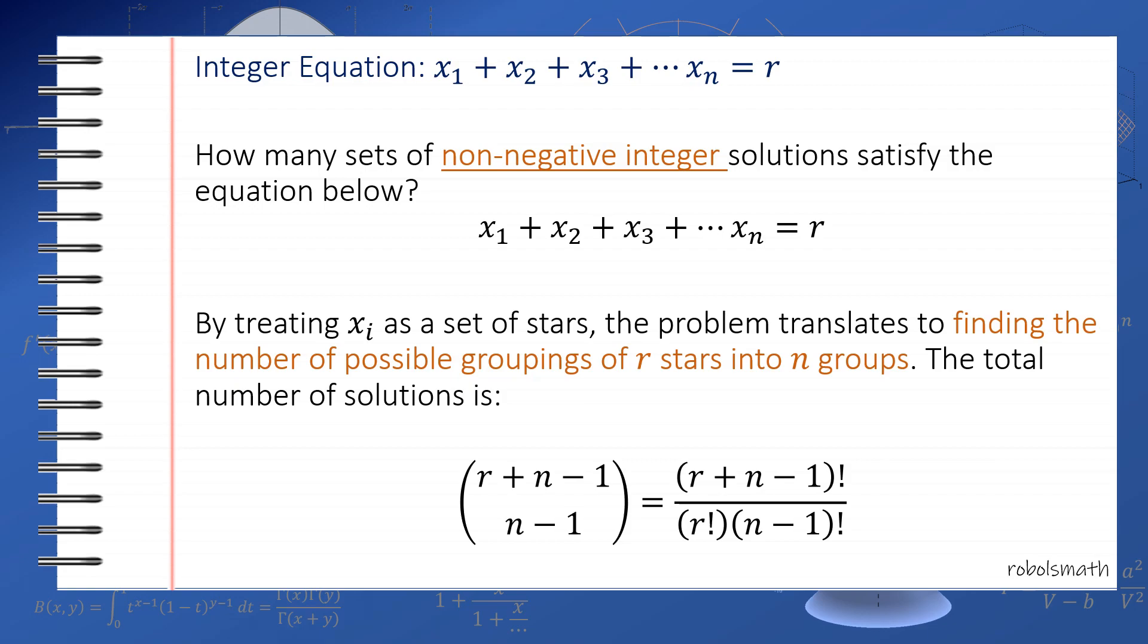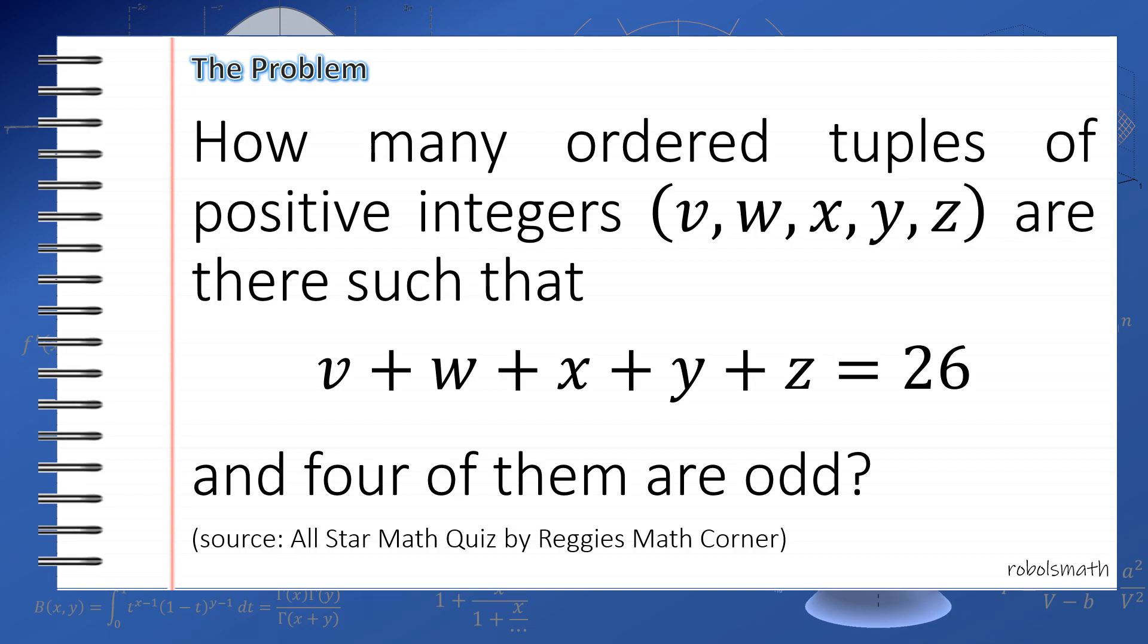In this video, we will be solving this problem: How many ordered tuples of positive integers (v, w, x, y, z) are there such that v + w + x + y + z = 26 and four of them are odd? This problem is lifted from the All-Star Math Quiz hosted by Regis Math Corner.